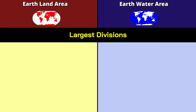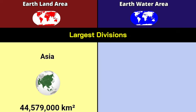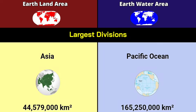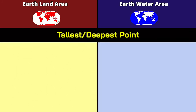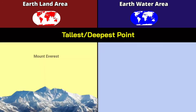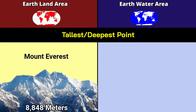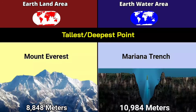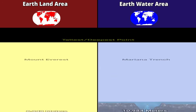Largest divisions by area: Asia at 44.57 million square kilometers on land, and the Pacific Ocean at more than 165.2 million square kilometers for water. Tallest or deepest point: Mount Everest at 8,848 meters, and Mariana Trench at nearly 11,000 meters.